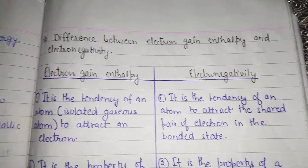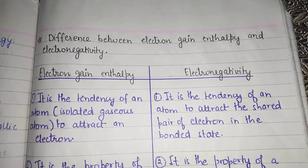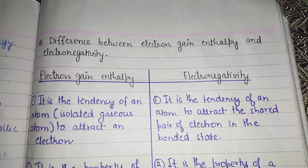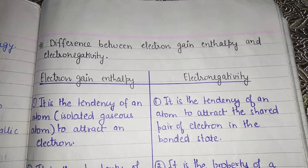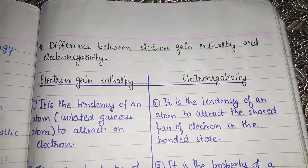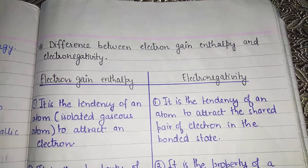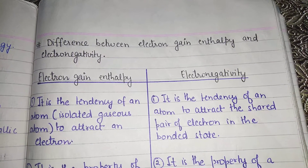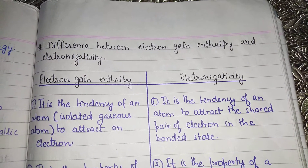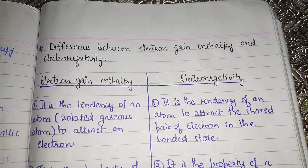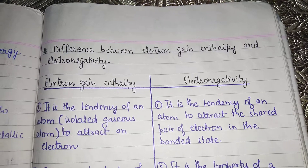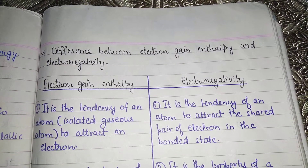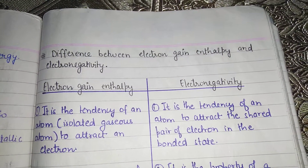Electron gain enthalpy is the tendency of an isolated gaseous atom to attract an electron — specifically, to attract a single electron onto its outermost shell.